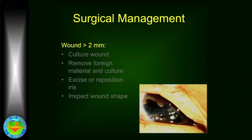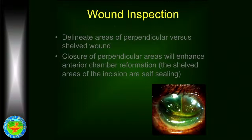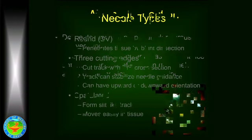When the wound is greater than two millimeters, that's going to require surgical management. One should first culture the wound — that is very important because all of these injuries are presumably contaminated. It's important to remove any foreign material from the wound and to carefully inspect the shape of the wound, because that's going to determine your surgical technique. Inspection of the wound sometimes cannot be done effectively until you're under the microscope, but if you can, it's important to do so early. Determine if there are portions of the laceration which are perpendicular and portions which are shelved — if you close the perpendicular portions first you will gain wound stability, because the shelved areas are generally self-sealing.